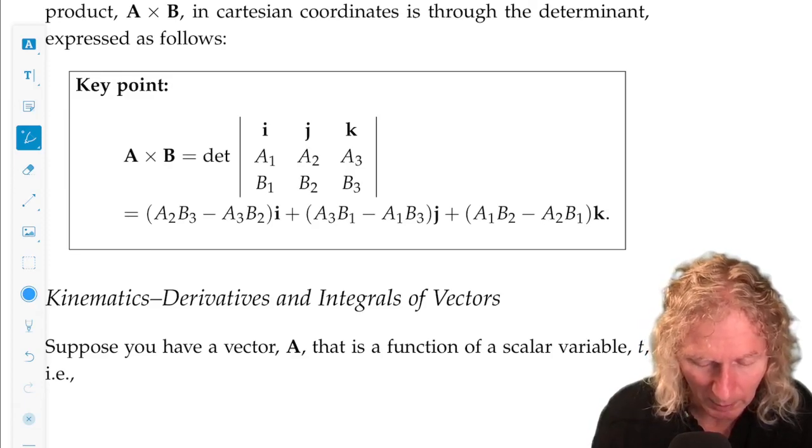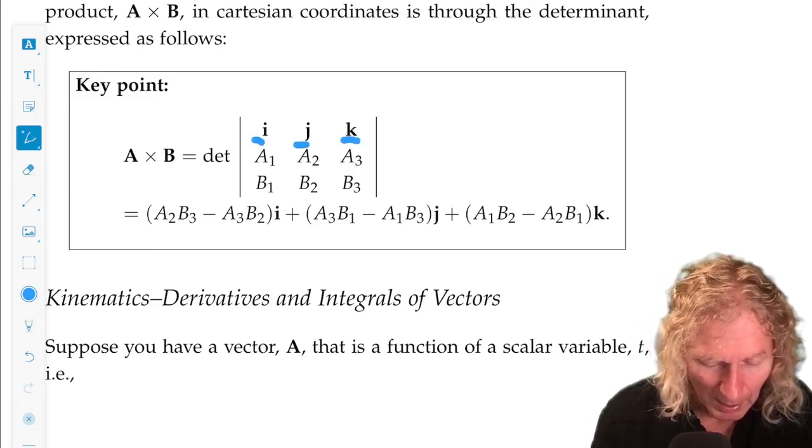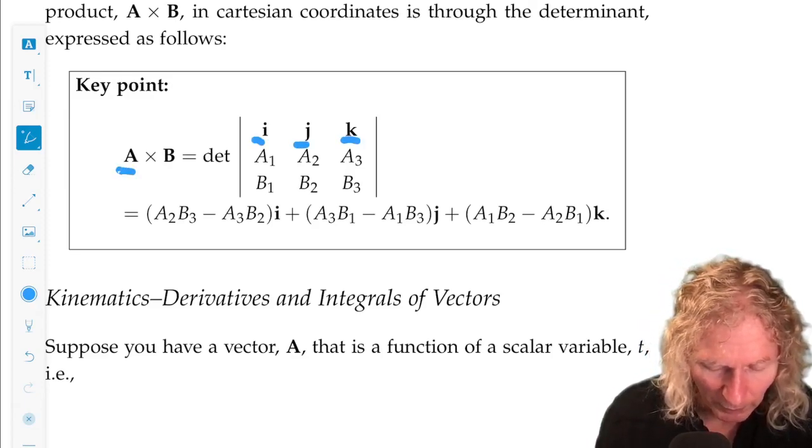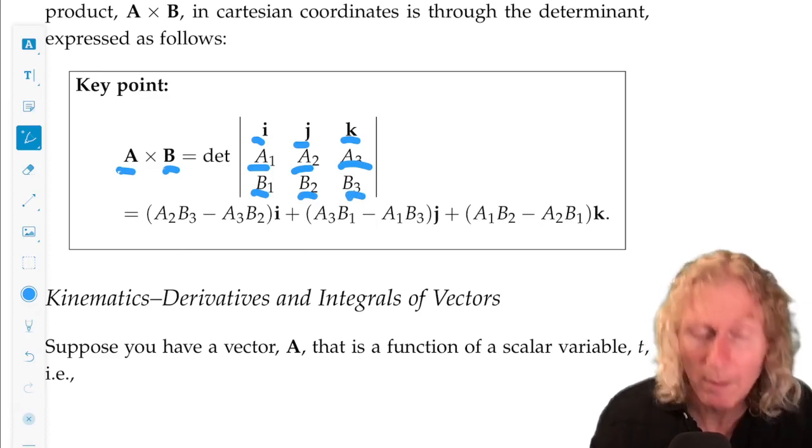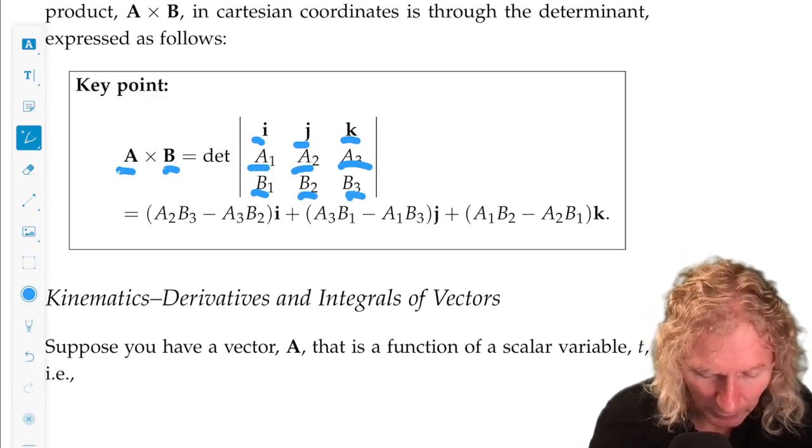For A and B defined as above, we put i, j, k across the top. A comes first, components of A in the second row. B is second, components of B in the second row. And then just compute the minors of this determinant.